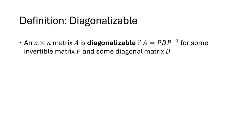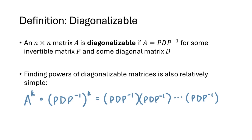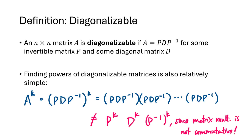An n by n matrix A is diagonalizable if A equals P times D times P inverse for some invertible matrix P and some diagonal matrix D. Finding powers of diagonalizable matrices is also relatively simple. A to the K means multiplying P D P inverse by itself K times. You might think this works out to be P^K D^K P^{-K}, but that doesn't work because matrix multiplication is not commutative — we can't rearrange the letters to put all the P's together, all the D's together, and so on.